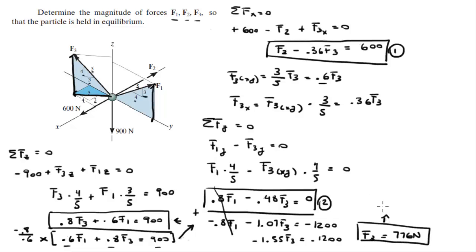Then you plug in F3 into equation 2, right here, and you solve for F1, and you get that F1 is equal to 466 Newtons. And then you plug in F3 into equation 1. When you plug in F3 into equation 1, you get that F2 is equal to 879 Newtons.